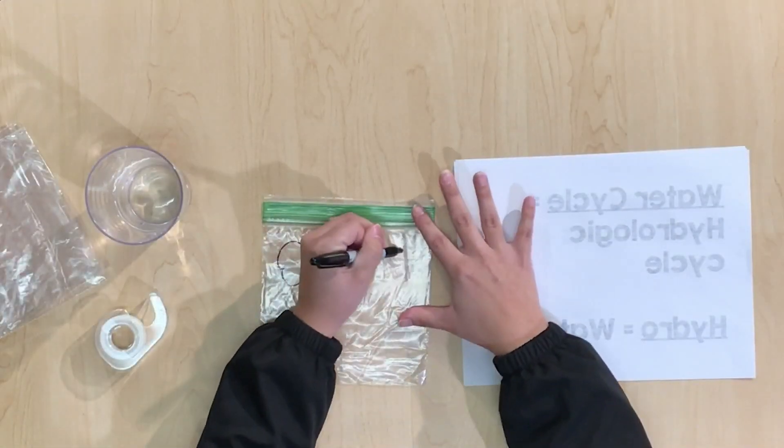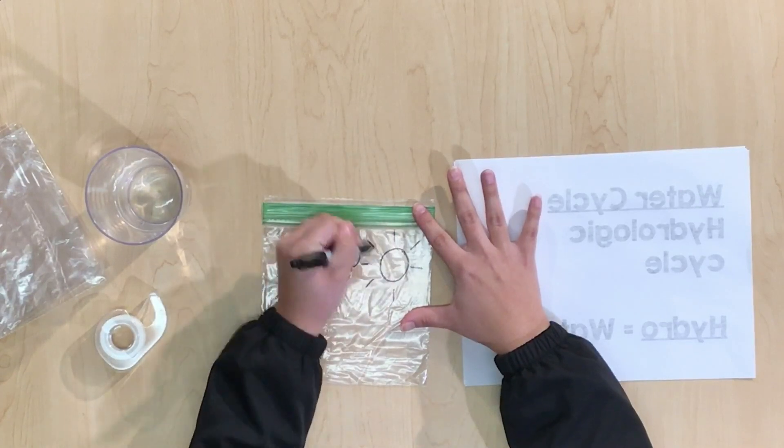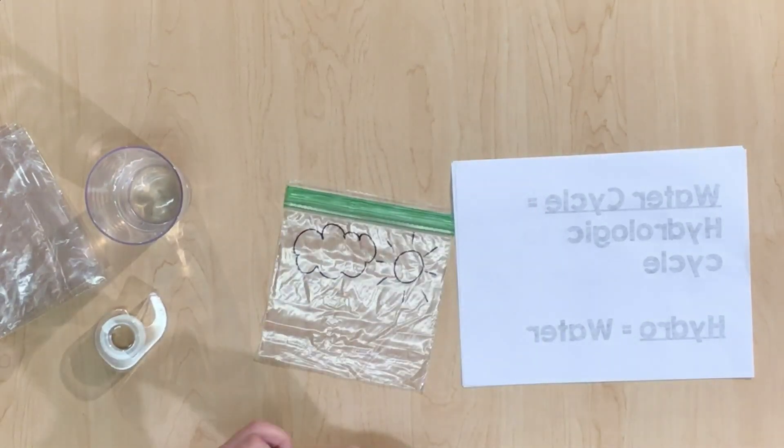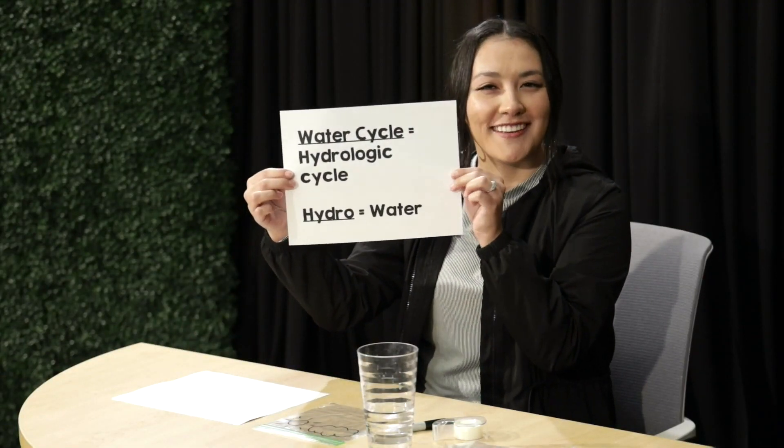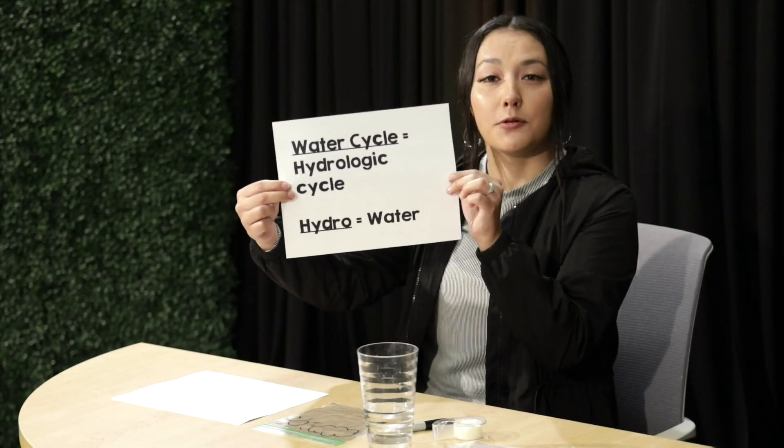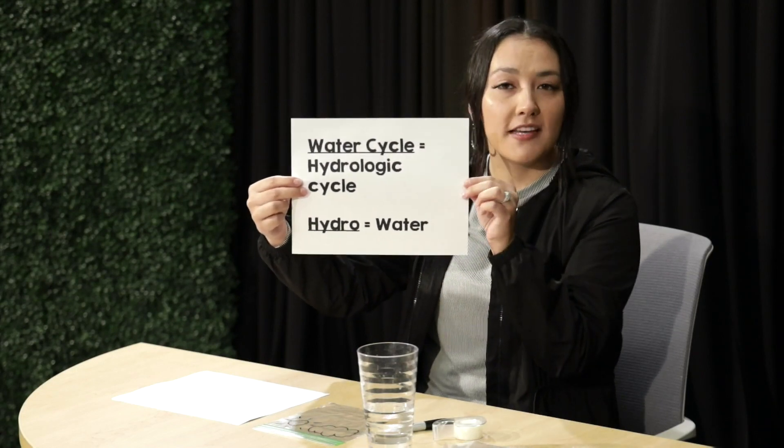You're going to get your bag and your permanent marker and I want you to draw some clouds and your Sun. While you're working on that, another word for the water cycle is the hydrologic cycle. Hydro is a Greek root word meaning water, so for example if you hear the word hydroflask or hydrate, it is referring to water. Today we're going to be learning about three key words that will help us understand the water cycle.